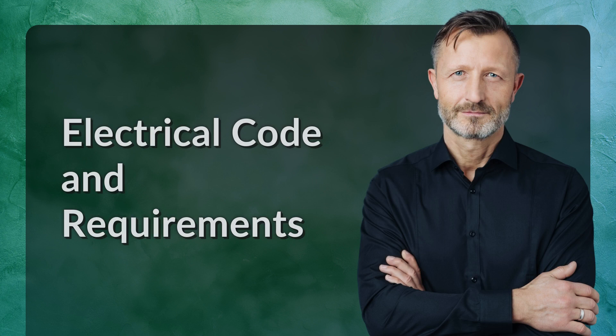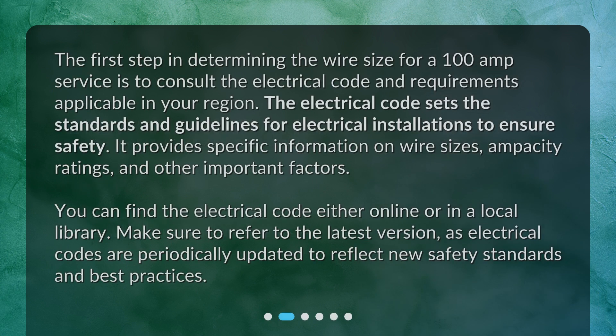Electrical Code and Requirements. The first step in determining the wire size for a 100 amp service is to consult the electrical code and requirements applicable in your region. The electrical code sets the standards and guidelines for electrical installations to ensure safety. It provides specific information on wire sizes, ampacity ratings, and other important factors. You can find the electrical code either online or in a local library. Make sure to refer to the latest version, as electrical codes are periodically updated to reflect new safety standards and best practices.